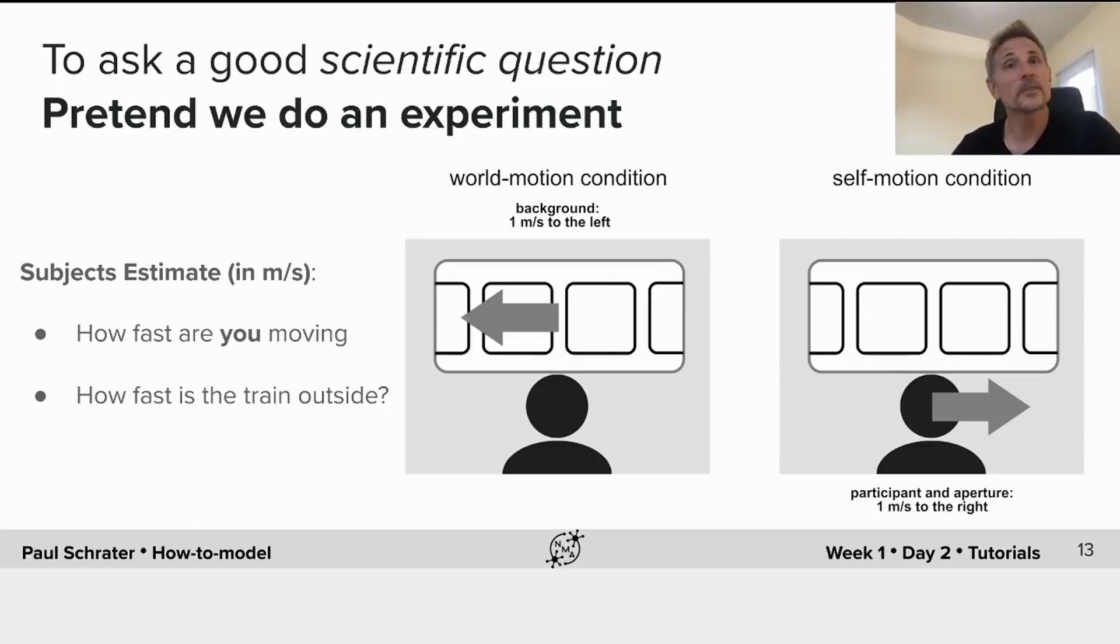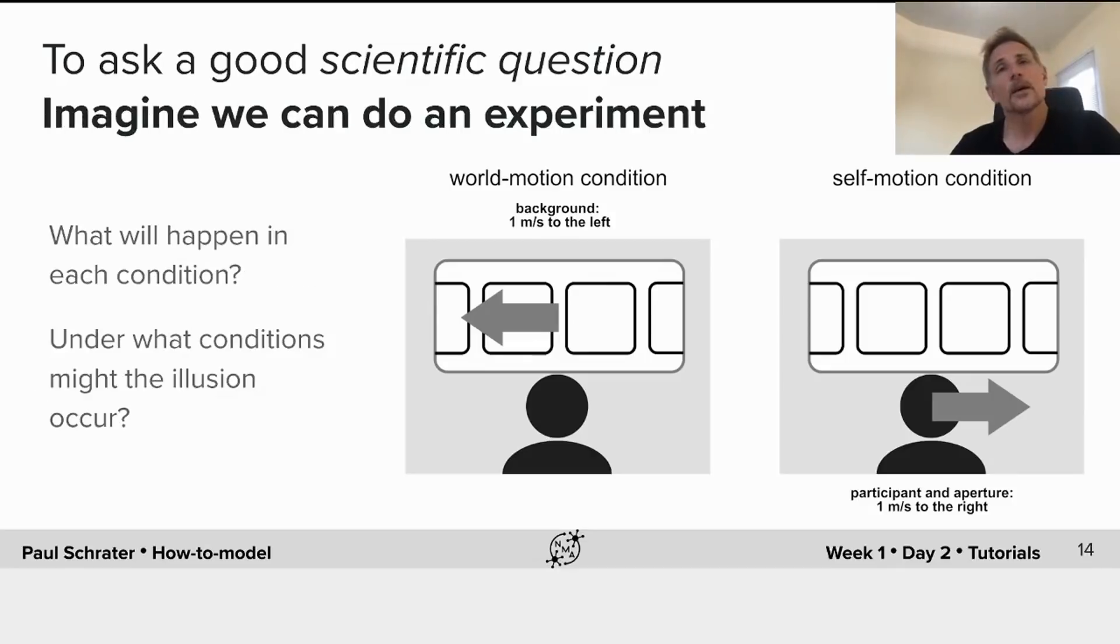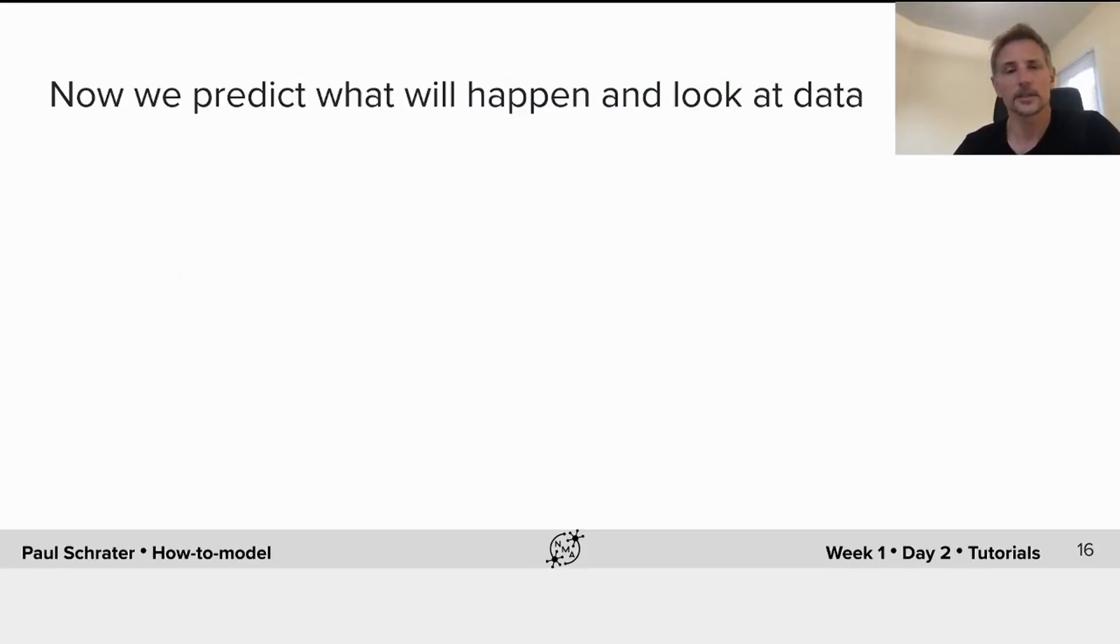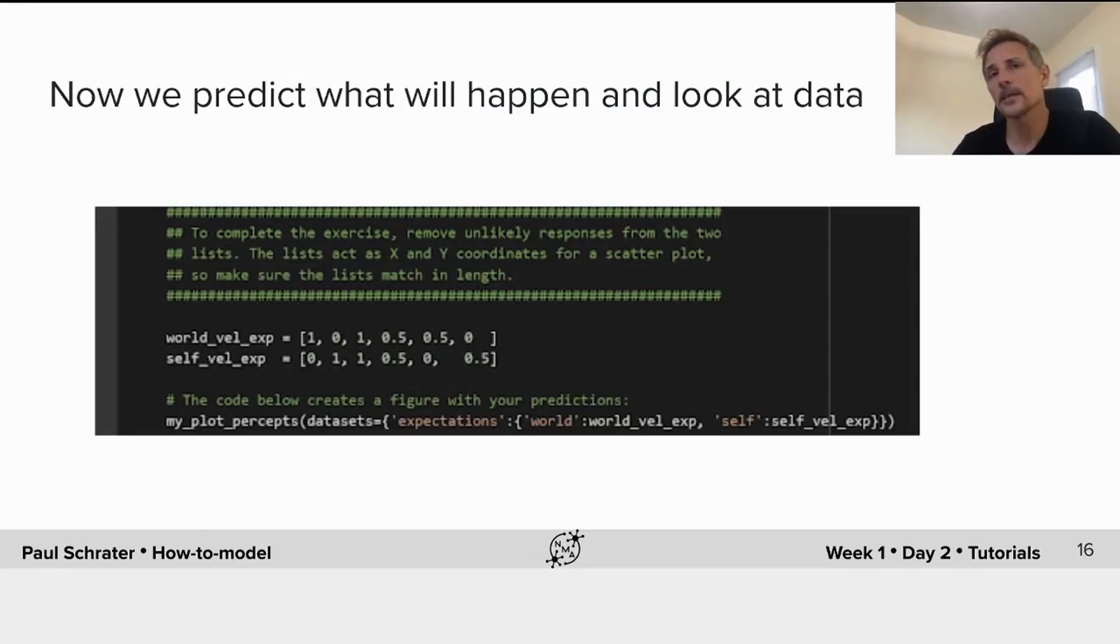By asking both of the questions, we can get at any range of settings where you feel like you are entirely moving and the world outside is still, the world outside is moving and you're still, or anything in between. What we'd like you to do now is try to predict what will happen in each of the conditions, in the world motion condition and in the self-motion condition. What conditions do you think the illusion might occur? Go now and predict what will happen and look at the data.